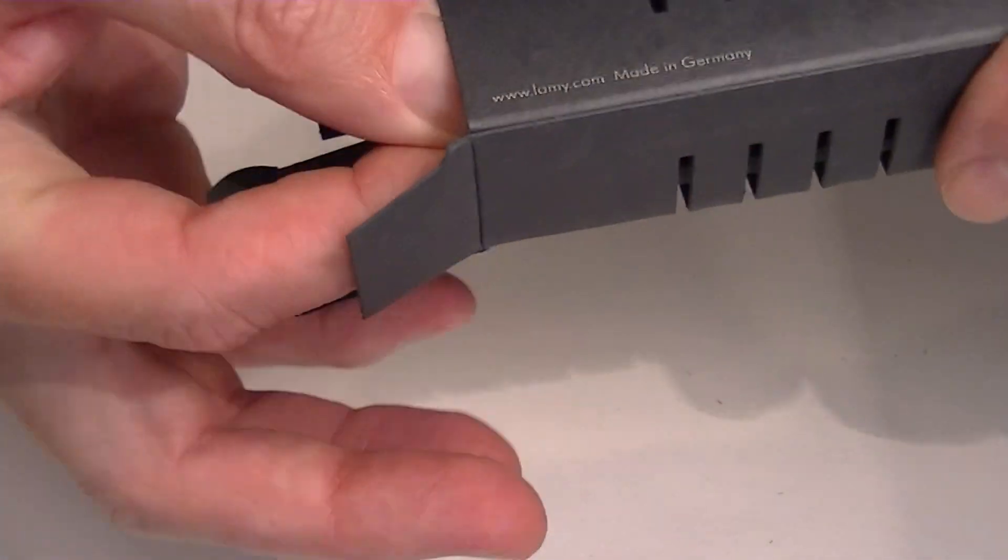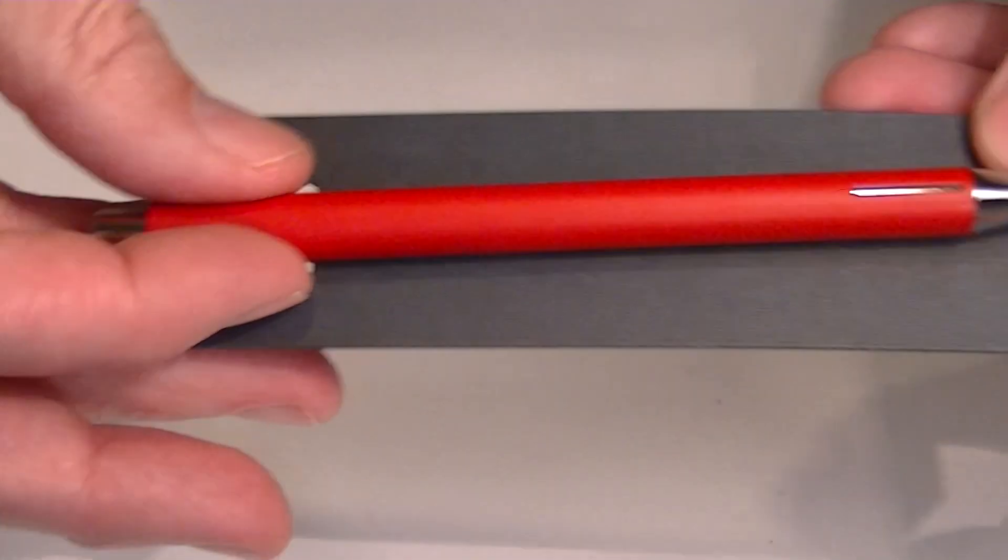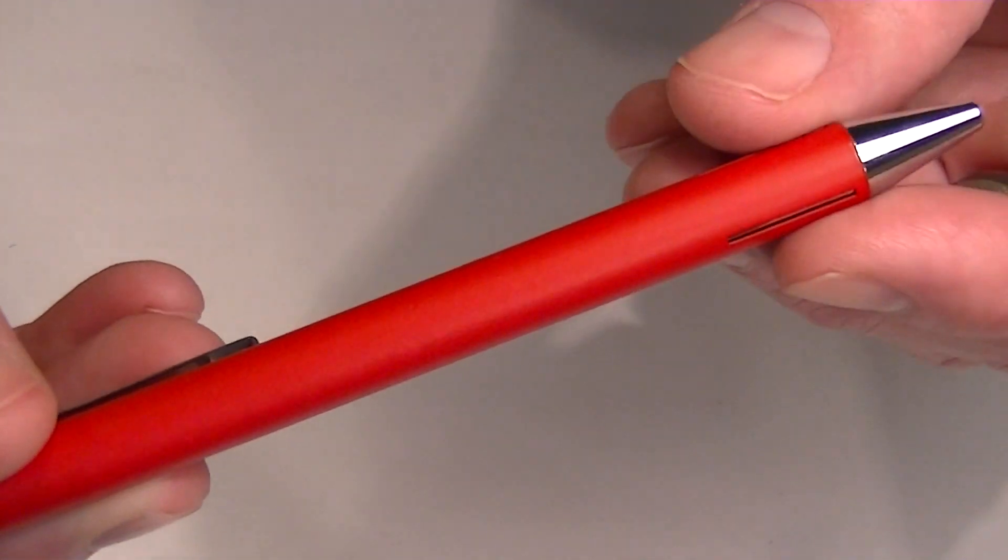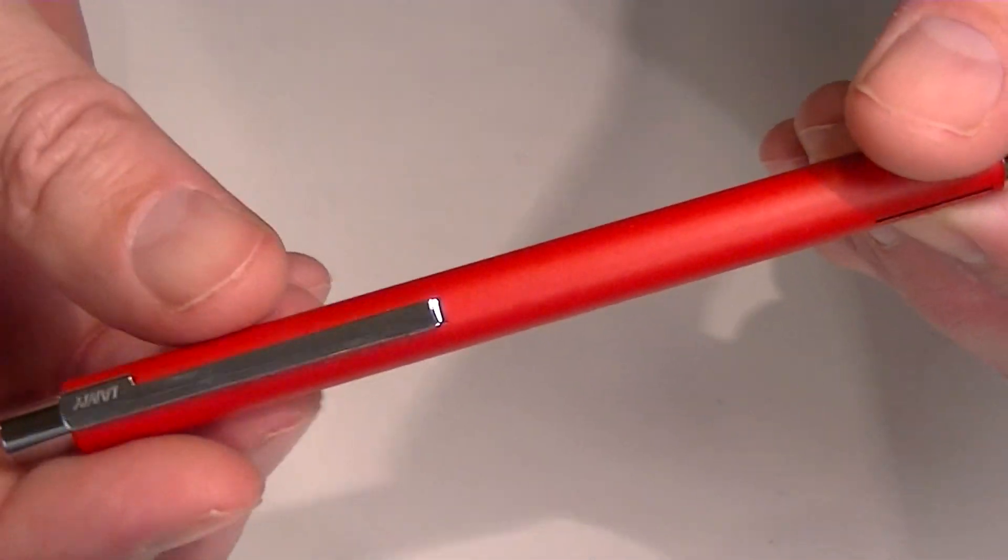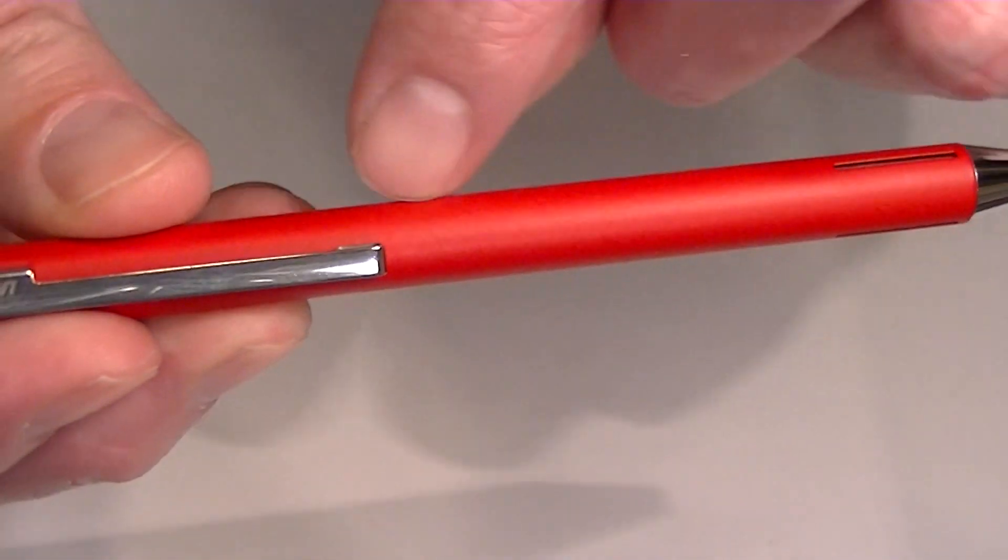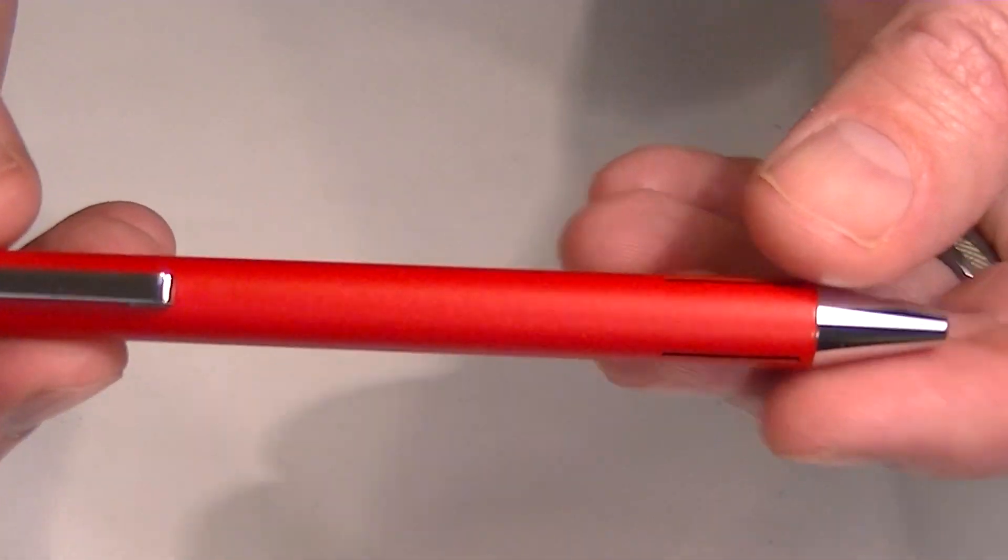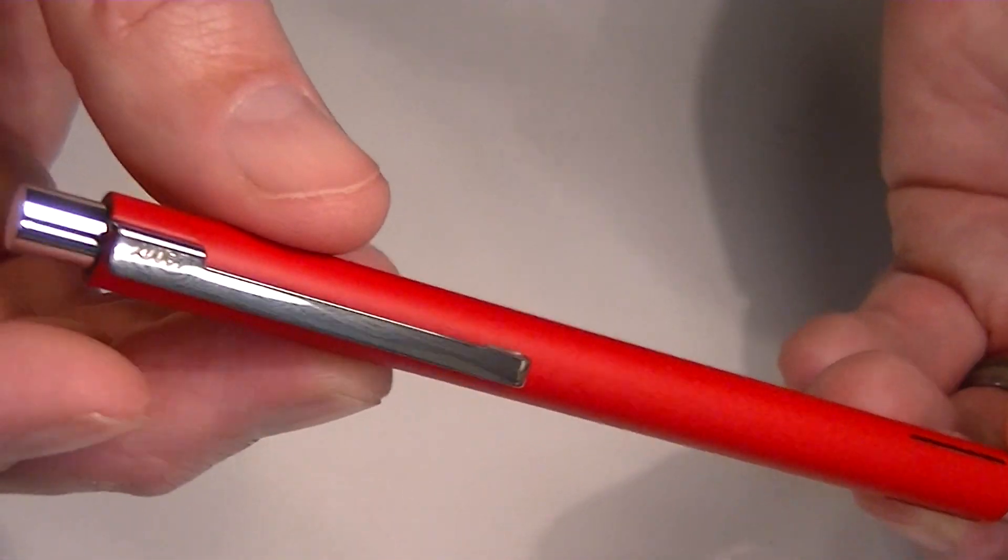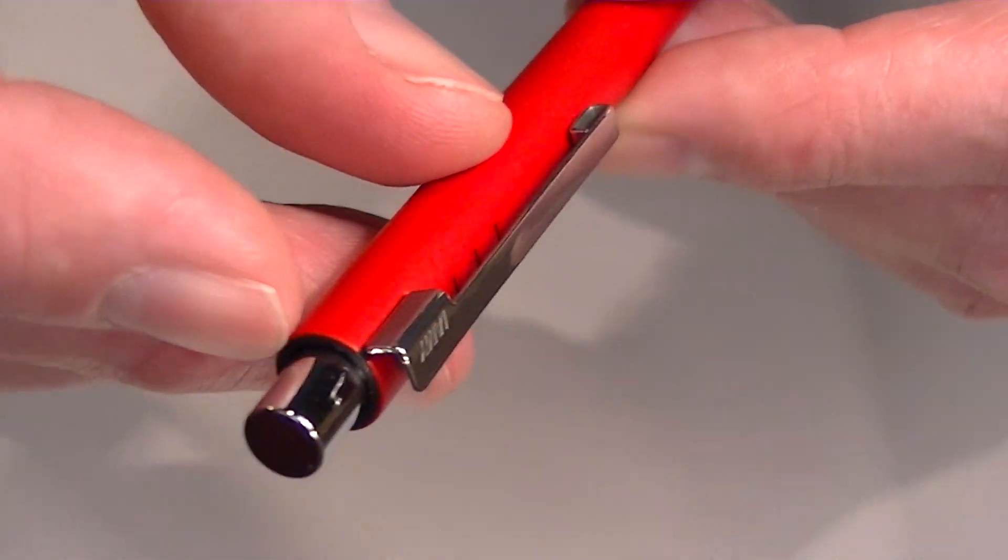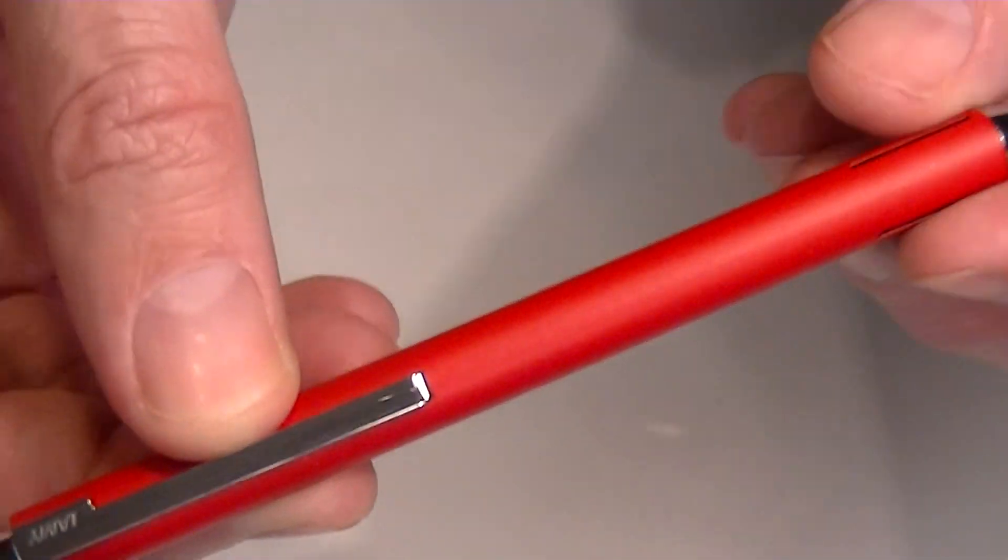And this is the Lamy Econ Ballpoint Pen. This is the crimson red version of the pen. All of the pens come with a metal barrel, metal components, and chrome accents. It has a chrome button here on the top.